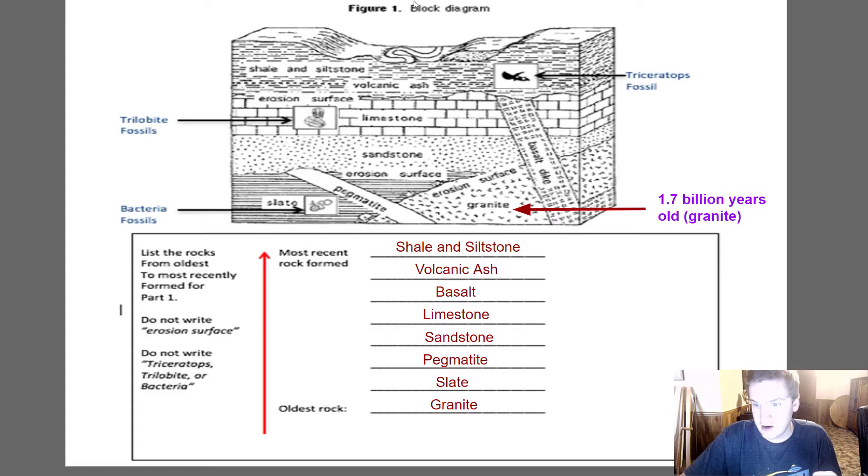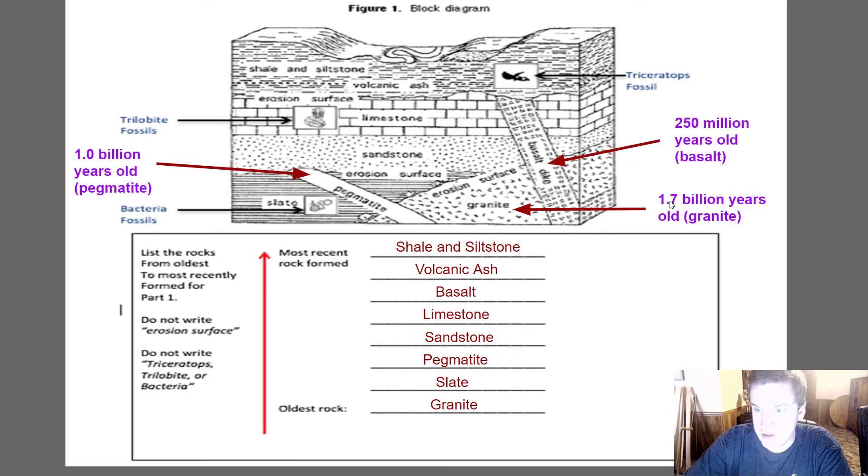I already highlighted the granite. These are igneous rocks. We can get the exact ages of just these four layers here. The granite, we took that to the lab. We compared the uranium to lead ratios. We figured out that this is 1.7 billion years old. The pegmatite is 1 billion years old. The basalt is 250 million years old. And the volcanic ash layer, that is an igneous layer. We know that that is 65 million years ago. That's the extinction of the dinosaurs. We know that that happened 65 million years ago. And that's how we figured that out was we were able to age the volcanic ash layer.